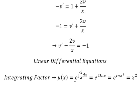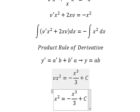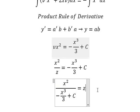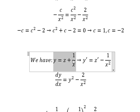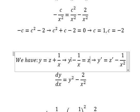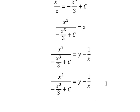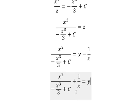Recalling that v equals one over z, we substitute back: one over z times x squared equals x cubed over 3 plus C. Rearranging, z goes to the right. Then we change z back into y minus one over x to obtain the final answer in terms of y.